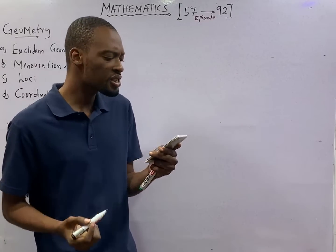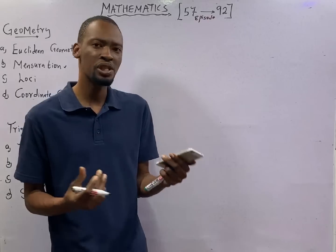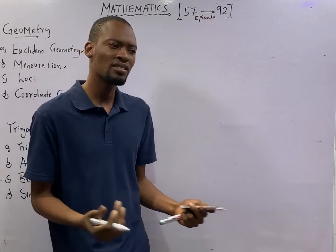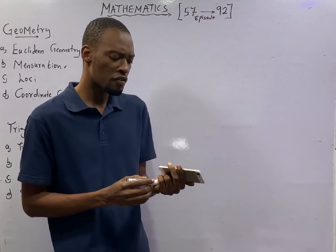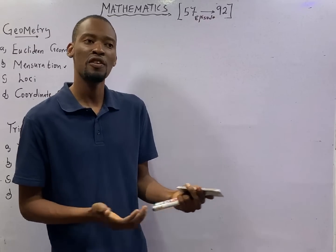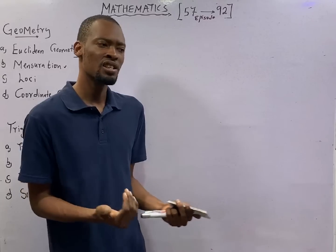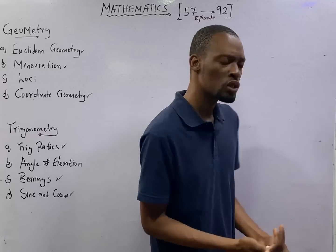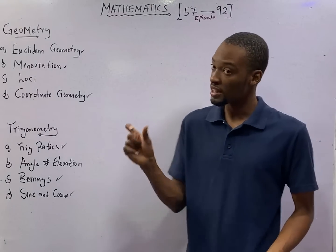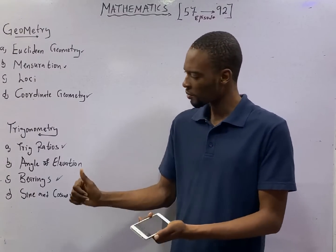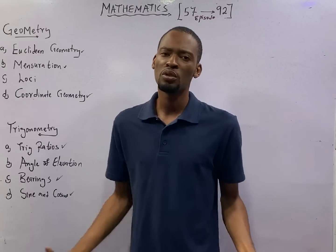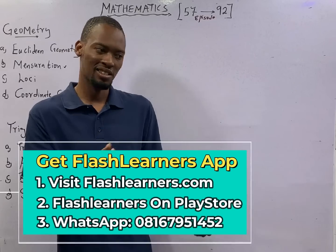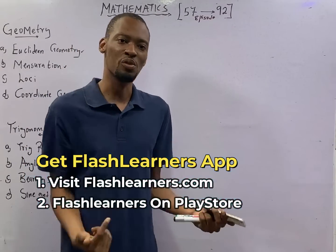Look at this. It says: find the midpoint. Coordinate geometry is simply finding the position or the distance of objects or of points using coordinates. In our coordinate geometry, we shall be making use of two dimensions — that is X and Y. In advanced level, you'll be solving problems under 3D: X, Y, and Z.